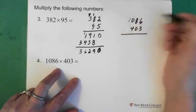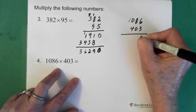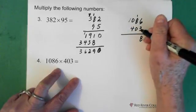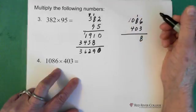So 3 times 6 is 18. 8 goes here. The 1 goes there.